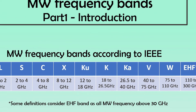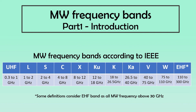Frequencies on the lower end of the microwave spectrum — that is 0.3 to 1 GHz — do not have a single-letter IEEE naming. However, these are referred to as Ultra High Frequencies, or UHF. Similarly, on the other side, frequencies from 110 to 300 GHz also do not have a single-letter IEEE designation, and are commonly referred to as Extremely High Frequency, or EHF band. However, many people also refer to EHF band as all microwave frequencies above 30 GHz.